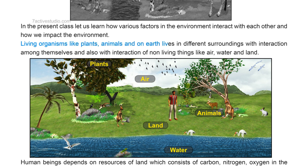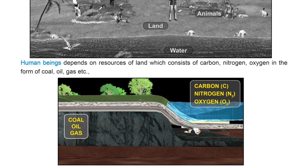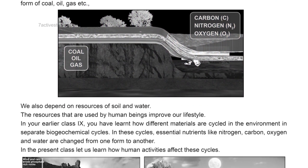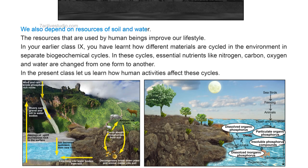Living organisms like plants, animals, and humans on Earth live in different surroundings, interacting among themselves and with non-living things. Human beings depend on resources of land, which consists of carbon, nitrogen, and oxygen in the form of coal, oil, and gas.